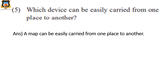Which device can be easily carried from one place to another? The answer is a map. Why? Because the globe is delicate — we cannot handle it roughly, we have to handle it very properly. A map is very easy to carry from one place to another. We can place the map on a cupboard or hang it, but the globe has to be handled very properly. Got it?